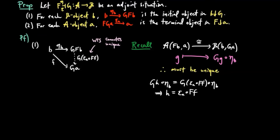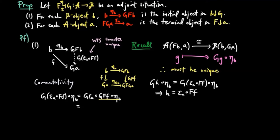So we only need to show the commutativity. We have G on epsilon A composed with F, composed with eta B is equal to G epsilon A composed with G F composed with F, composed with eta B. And we use naturality of the unit eta to make the substitution of eta G A composed with F for G F composed with F, composed with eta B. But G epsilon A composed with eta G A is equal to the identity on G A by the triangle identity of the adjoint situation. And so it is equal to F.